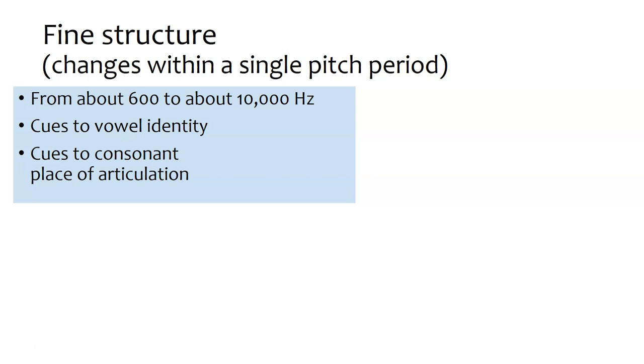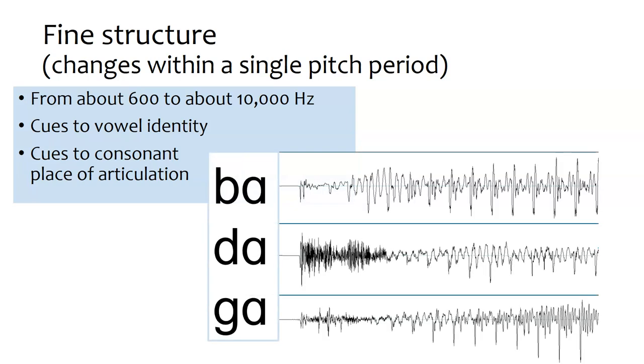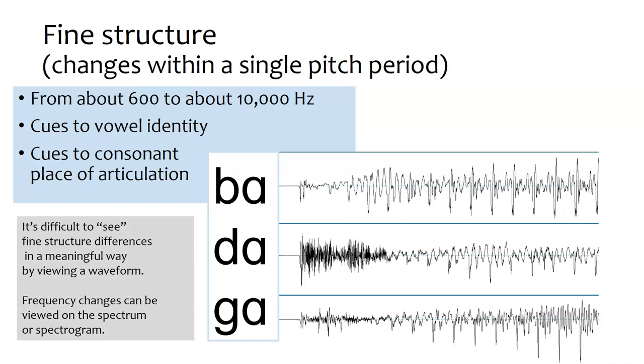We've thought about consonant voicing and consonant manner, but even if you know the voicing and the manner, so if I said you're listening to a voiced stop sound, you still don't know what sound you're hearing. And so to tell the difference between a b, d, and g sound, as we have here, you actually need to look at the fine structure of the sound, because those are where the details are that differentiate place of articulation. You'll notice that this just looks like a random pattern, and it's true. It's really difficult to see fine structure differences on a waveform in any kind of meaningful way, and usually what we'd look at is a spectrogram to look at the differences between these sounds.